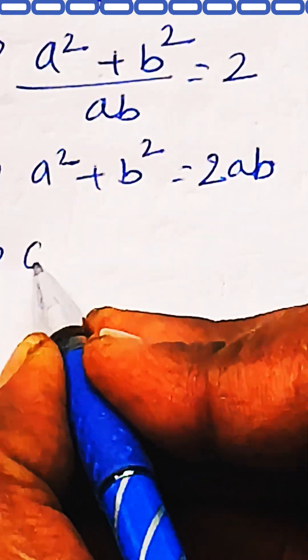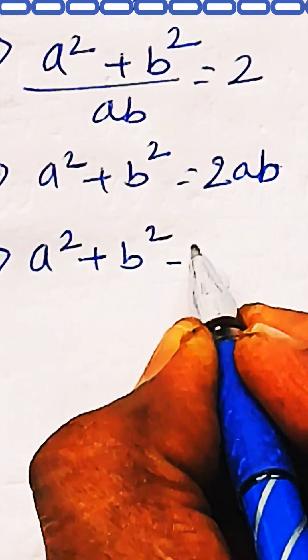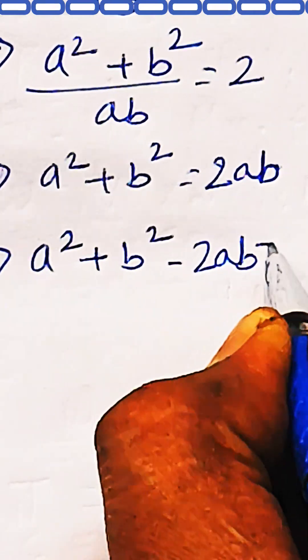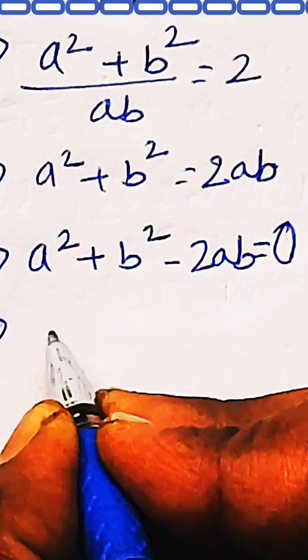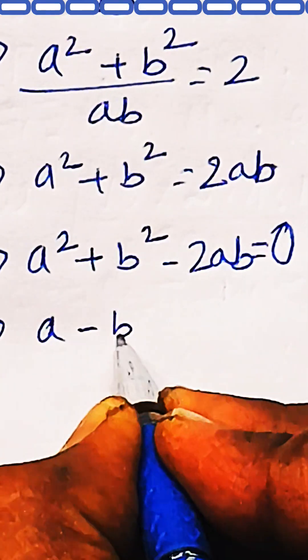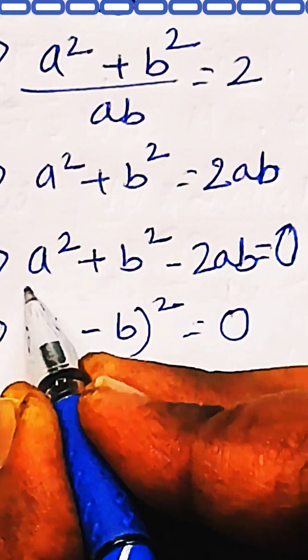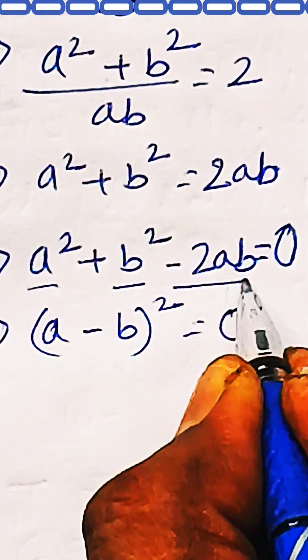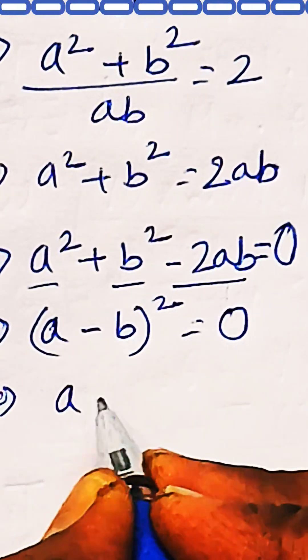Now, from here, if from the right-hand side we bring 2ab into the left-hand side, it becomes a² plus b² minus 2ab equals 0. Now we can see this is a standard form of the equation (a minus b) whole squared which is equal to 0. Because a² plus b² minus 2ab can be written as (a - b)² equals 0.